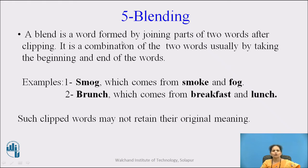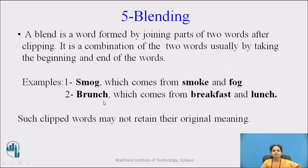The next type of word formation process is blending. A blend is a word formed by joining parts of two words after clipping. It is a combination of two words, usually by taking the beginning and the end of the words. Examples: 'smog' comes from 'smoke' and 'fog'; 'brunch' comes from 'breakfast' and 'lunch'. This is the combination of these two words.